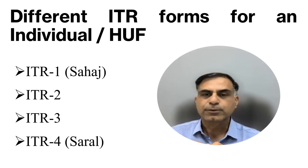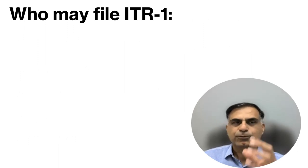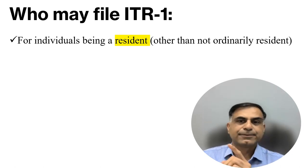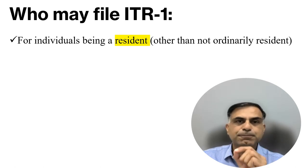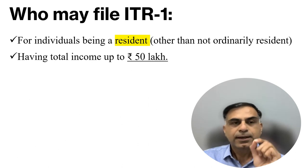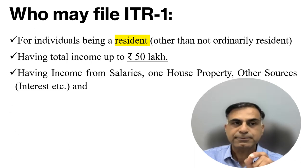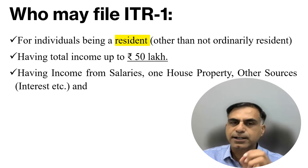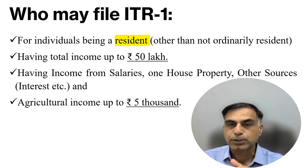ITR 2 and ITR 3 are primarily a bit more complex compared to ITR 1 or ITR 4. Now, ITR 1 form is applicable for individuals who are resident — a person who is not a resident, or is resident but not ordinarily resident, cannot file ITR 1. A person having total income up to rupees 50 lakh, with income from salaries, one house property, and other sources like interest and dividend, may file ITR 1, provided agriculture income does not exceed 5,000 rupees for the financial year.